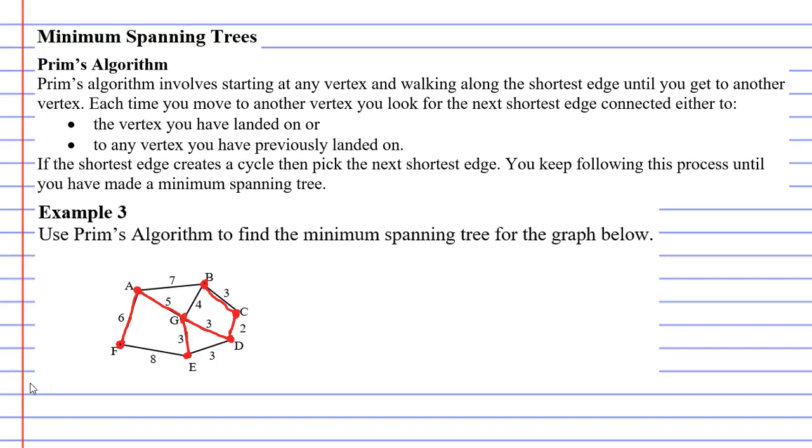If this is the correct minimum spanning tree, then it should all add up to 22. Let's actually check that. We've got 6 plus 5. We've got 3, 3s plus 3 plus 3 plus 3 and then a 2. And that adds up to 22.